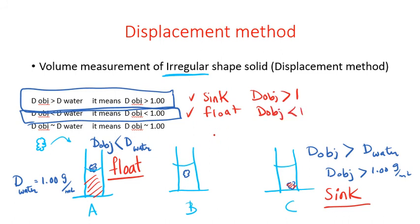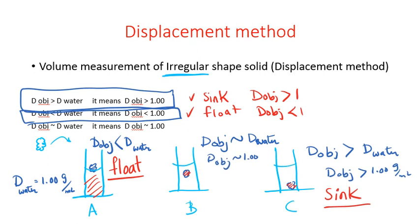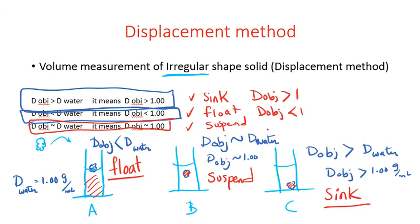What do you call it if we have our object in the middle of the graduated cylinder? You may say the density of the object is approximately the same as the density of water, or density of object is approximately 1.00 gram per mL. The terminology we use here is suspend — we call that suspend. So this is the last observation: suspend means density of object is approximately 1.00.